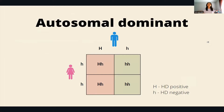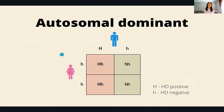Here is a Punnett square, and Huntington's is dominant. Looking at this hypothetical situation where the father is Huntington's positive but the mother is Huntington's negative, their offspring has a 50% chance of inheriting Huntington's.